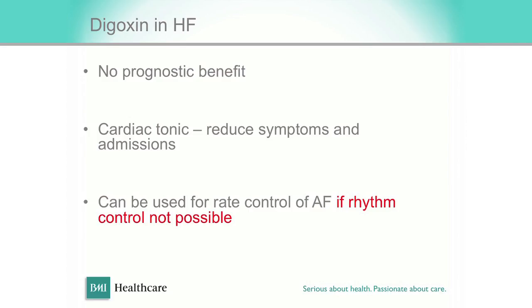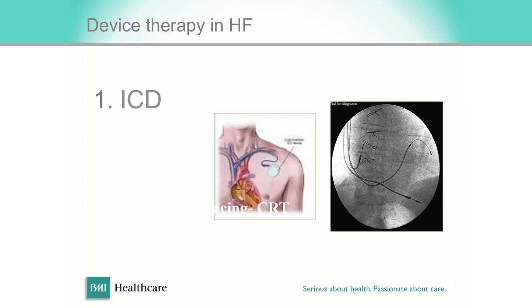Digoxin has no prognostic benefit whatsoever — it is a cardiac tonic. You can use it to improve symptoms or control the AF rate. The device therapy is an implantable cardioverter defibrillator. All heart failure patients should be considered for whether they need a defibrillator for saving life. There are very clear guidelines, most of which are ECG-based, as well as based on the degree of symptoms.